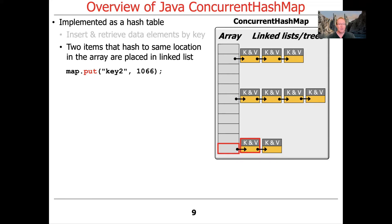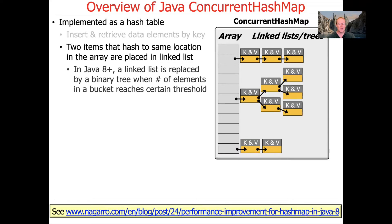If you have two items that hash to the same location, they're initially chained together in a linked list off that element in the underlying array. So if we put another key in that happens to hash to the same location, that gets resolved by adding a new element to the chain.